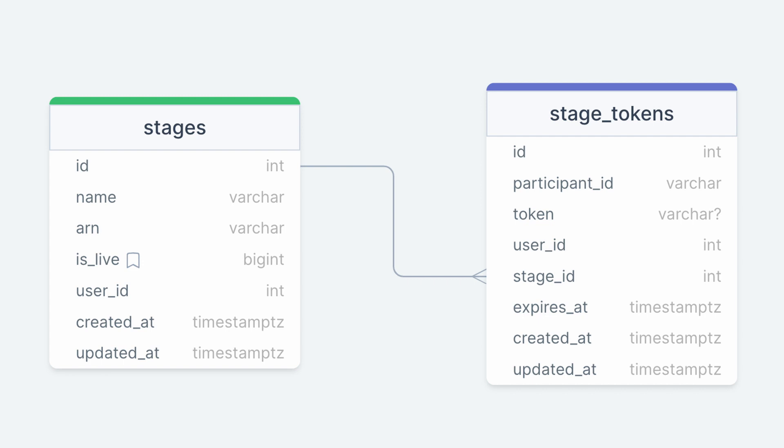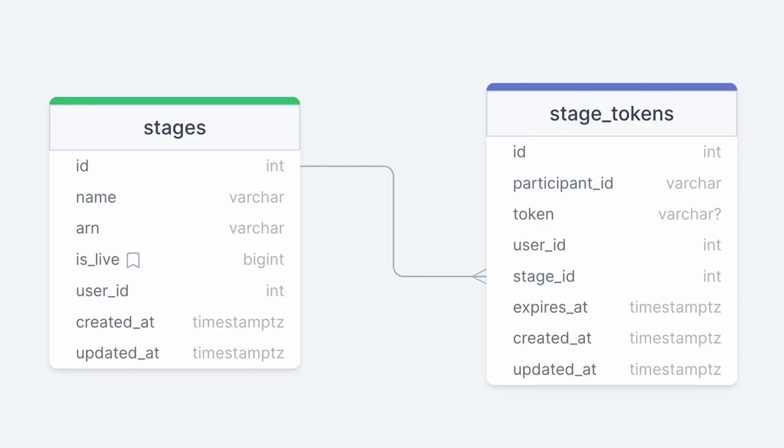A stage has a one-to-one relationship with a user and has many stage token entities. The stage token belongs to a user, and this property indicates the user who is invited to the current stage session, which is not always the user who owns the stage. The token property represents the token that is generated via the AWS SDK for JavaScript. This token has an expiration timestamp which is represented by the expires at timestamp.